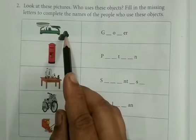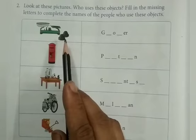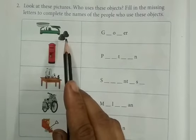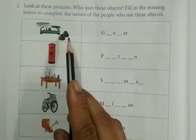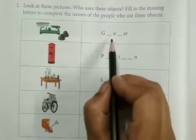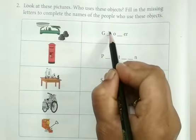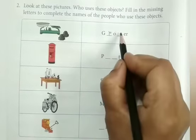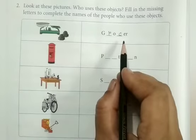So see the first picture. Yes. This object helps a grocer to sell food and small household goods. So we will write here grocer, G-R-O-C-E-R. And the spelling is complete.